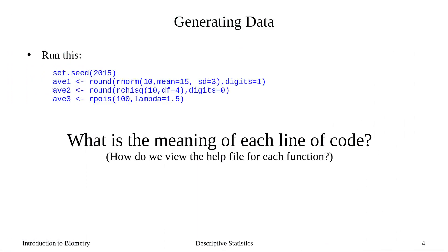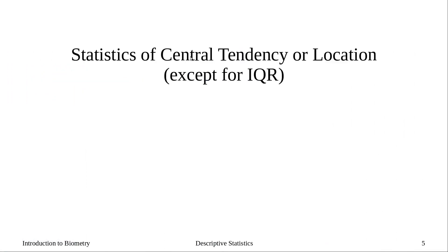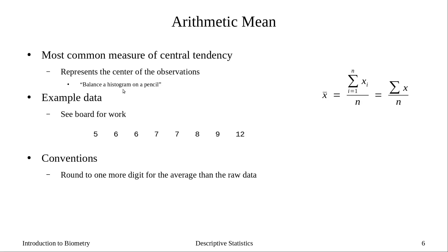We're going to start with statistics of central tendency, or location, with the exception of interquartile range, because we'll introduce that when we do medians. The first measure of central tendency is the arithmetic mean. This is the most common measure of central tendency, and it really represents the center of the observations. If we were to take our data, create a histogram, and place it on a scale, the balance point of that histogram represents the mean.